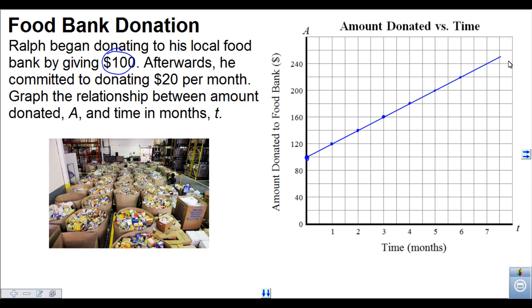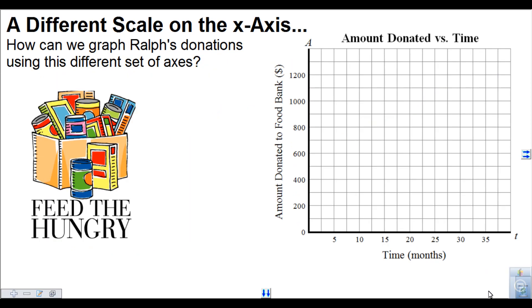So that's graphing the relationship between amount donated and time in months. Now this is relatively simple because the t-axis here, the x-axis, whatever you want to call it, is going up by one every time. But that's not going to happen all the time. What happens if we have a scale like this where the t-axis is going up by five or some other number? So we need to come up with another strategy.